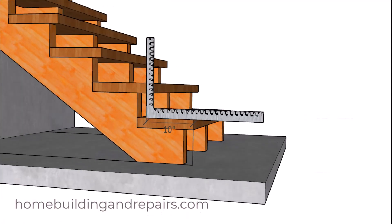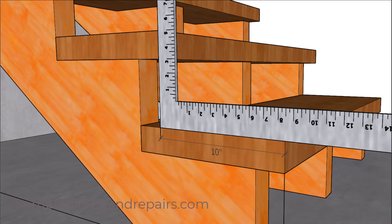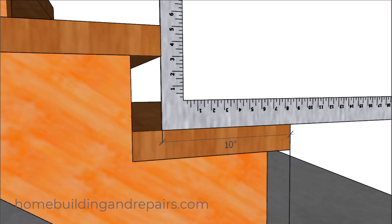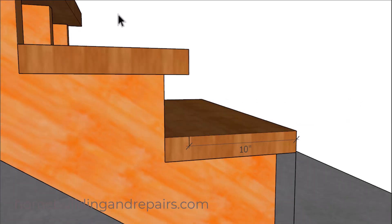However, on the other side, we're going to have something a little different. Because when we shove the framing square up against the farthest protruding section of the step above, and then measure the distance on the lower section, we're going to end up with a 10 inch tread depth measurement.